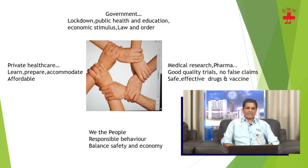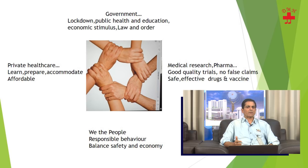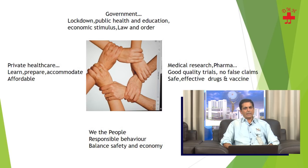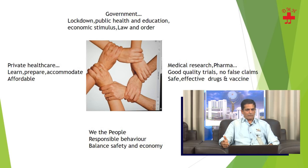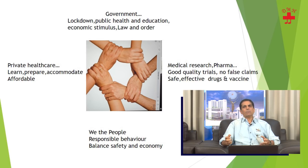Four players are fighting this virus. First, government: it must impose lockdowns, look after public health and education, provide economic stimulus, and maintain law and order. The Indian government is stable and strong, and I hope it does all of these. Second, medical research and pharma must bring new drugs and vaccines, make no false claims, and deliver good quality trials. If a vaccine or effective drug comes, we will win this war — my main hope rests with them.